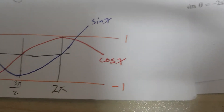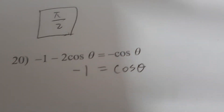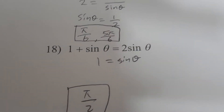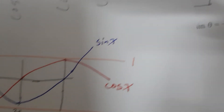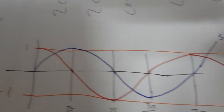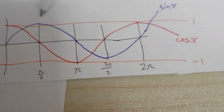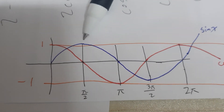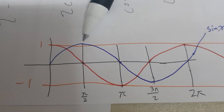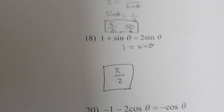Because we want to get sine theta — sine theta equals 1 — we'll look for where sine theta equals 1, and sine theta equals 1 is here: pi over 2. So our answer would be pi over 2.